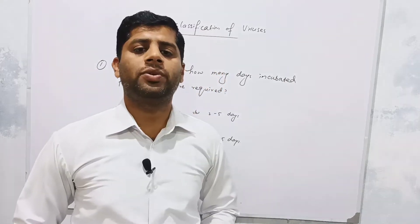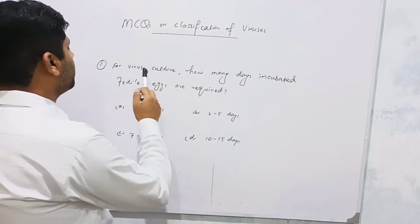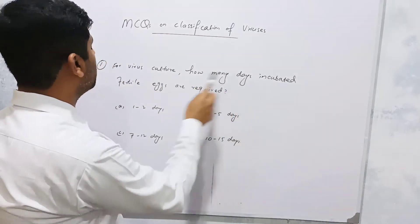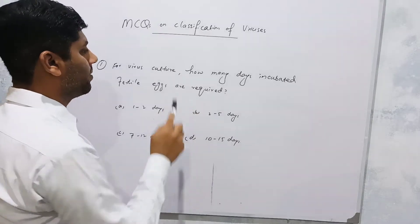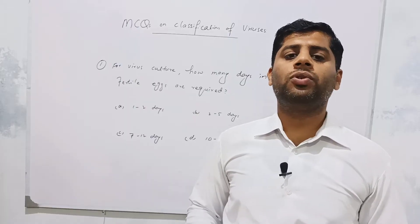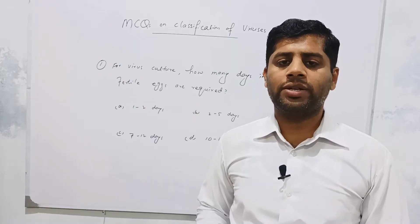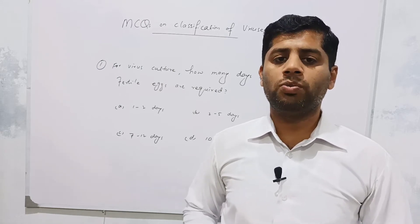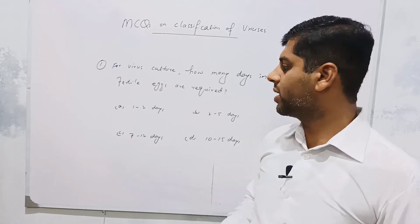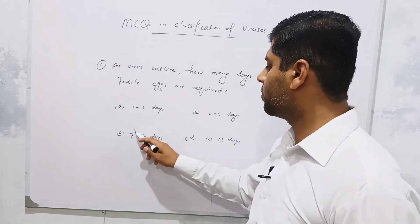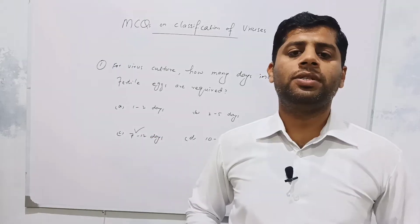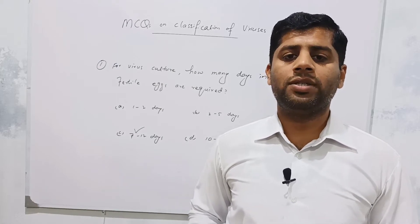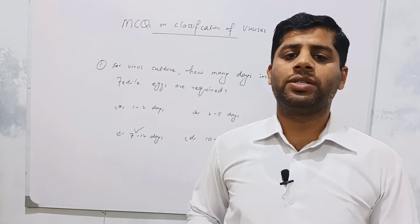The first MCQ related to this topic is on cultivation of virus. For virus culture or cultivation, how many days incubated fertile eggs are required? The question is: before cultivating or culturing the virus on fertile eggs, how many days should the eggs be incubated? The correct answer is 7 to 12 days — the eggs should be incubated for 7 to 12 days before inoculation of viruses into them.